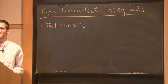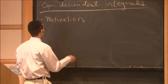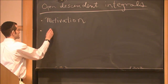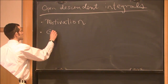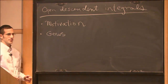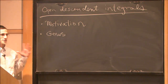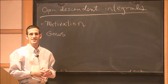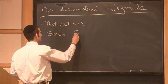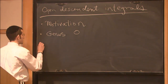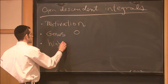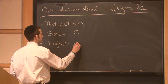Motivation, and then something about genus 0. I really want to try to talk about the geometric underpinnings of this theory. And then something about higher genus.